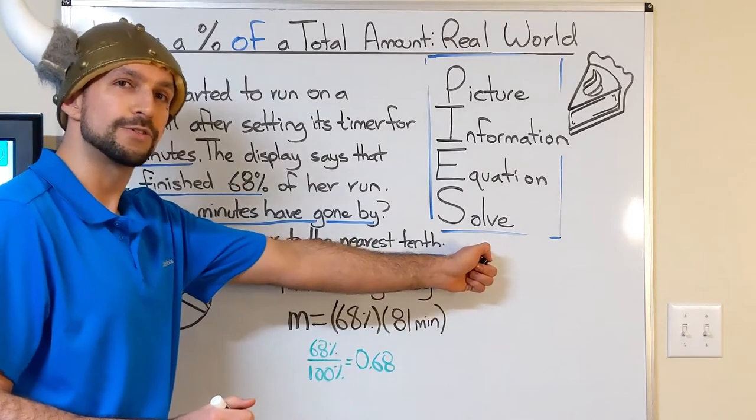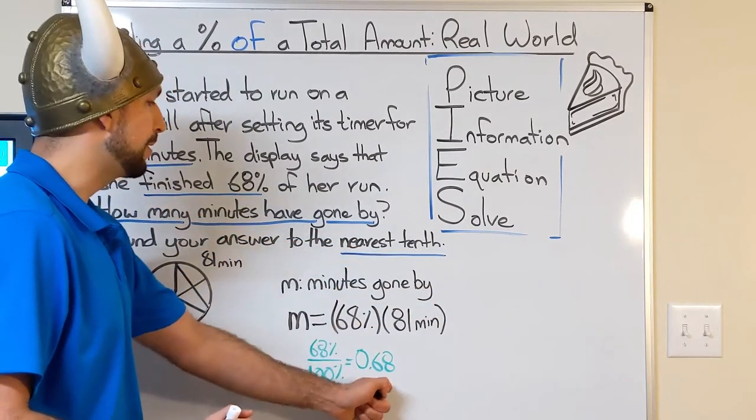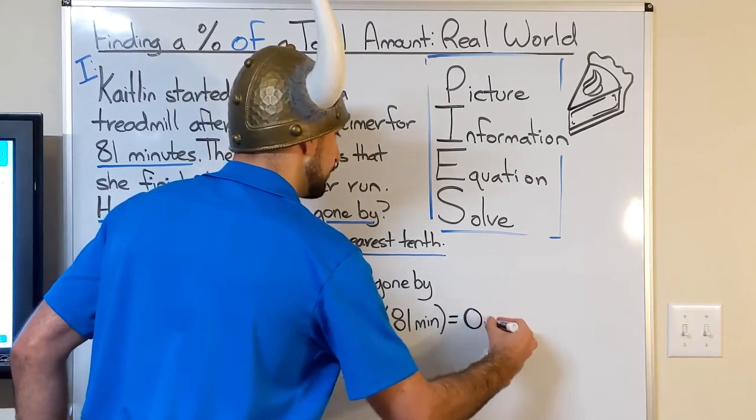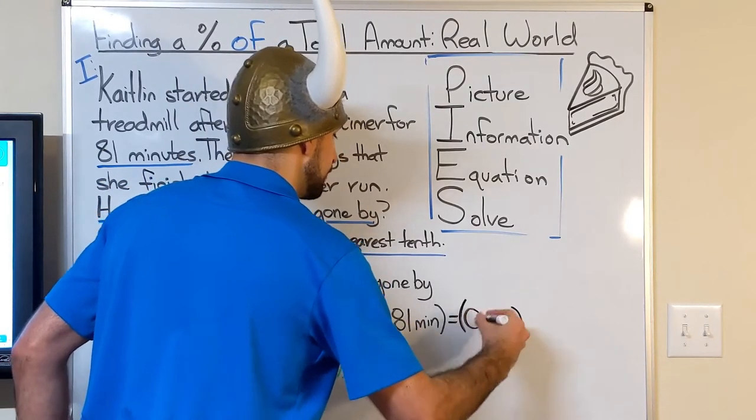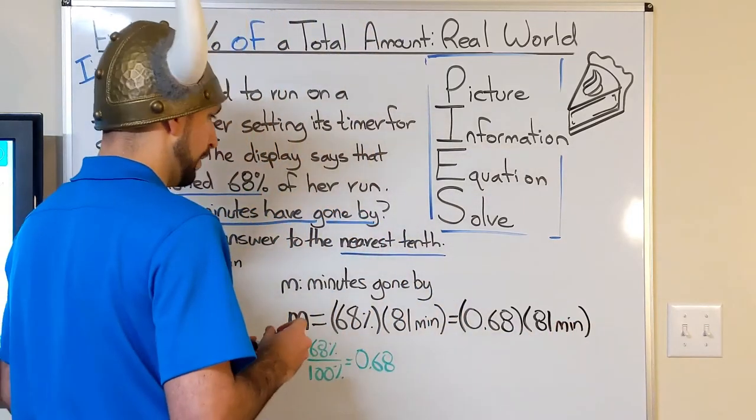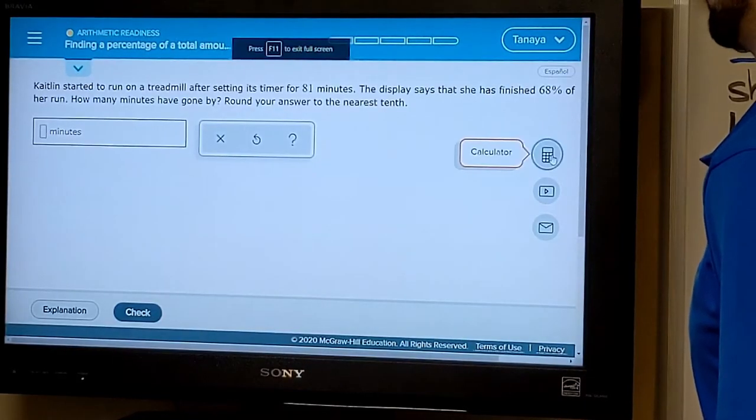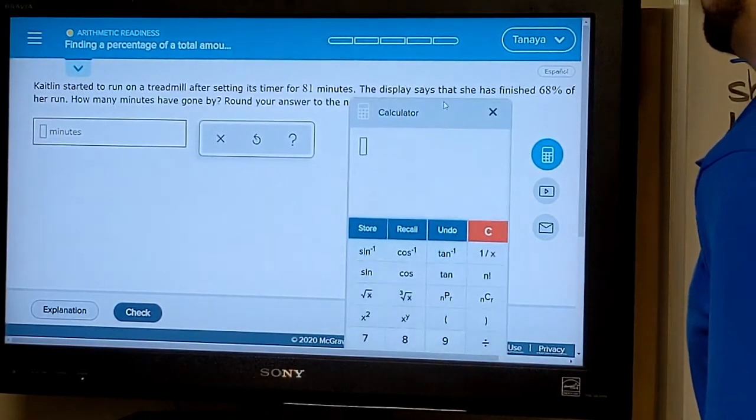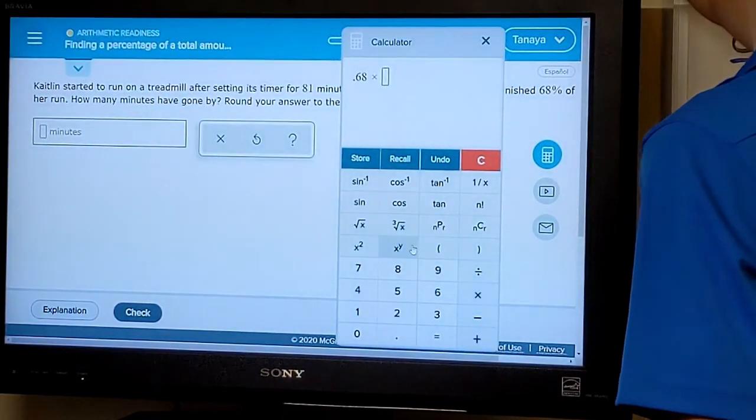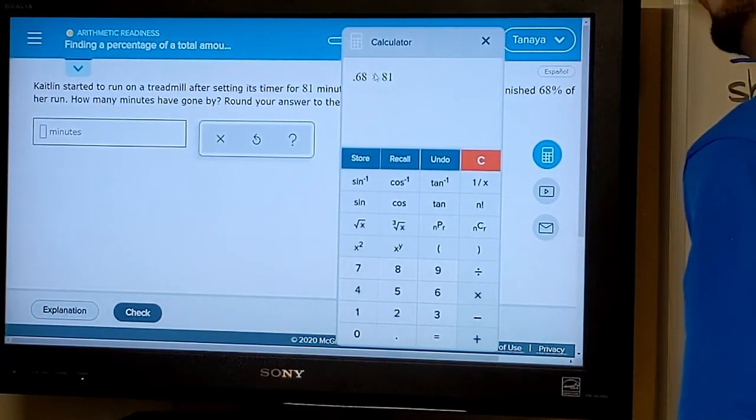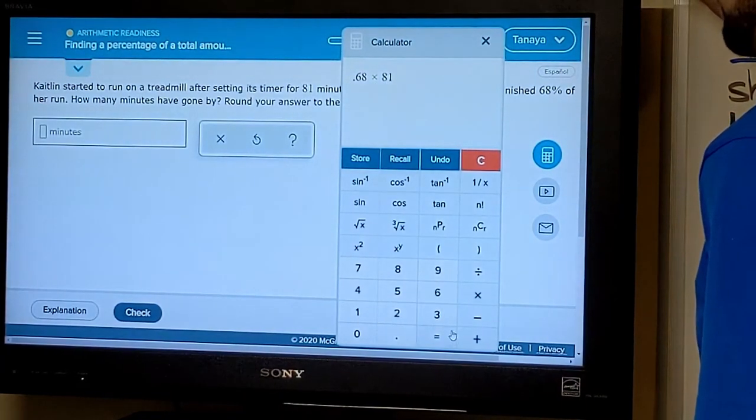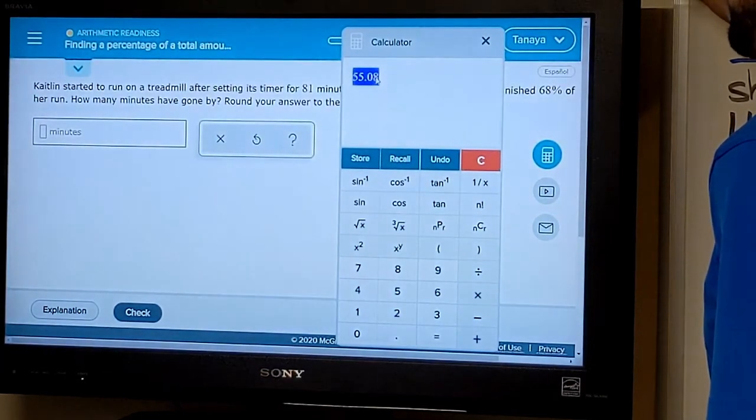So finally we're ready to solve our problem. Let's replace this percentage with our decimal representation so we can multiply the two. And we're going to put this in our calculator. So I'm going to pull my ALEX calculator. And I had 0.68 times 81 minutes. Again, 68% of 81 minutes will just be that percentage as a decimal times the whole amount.